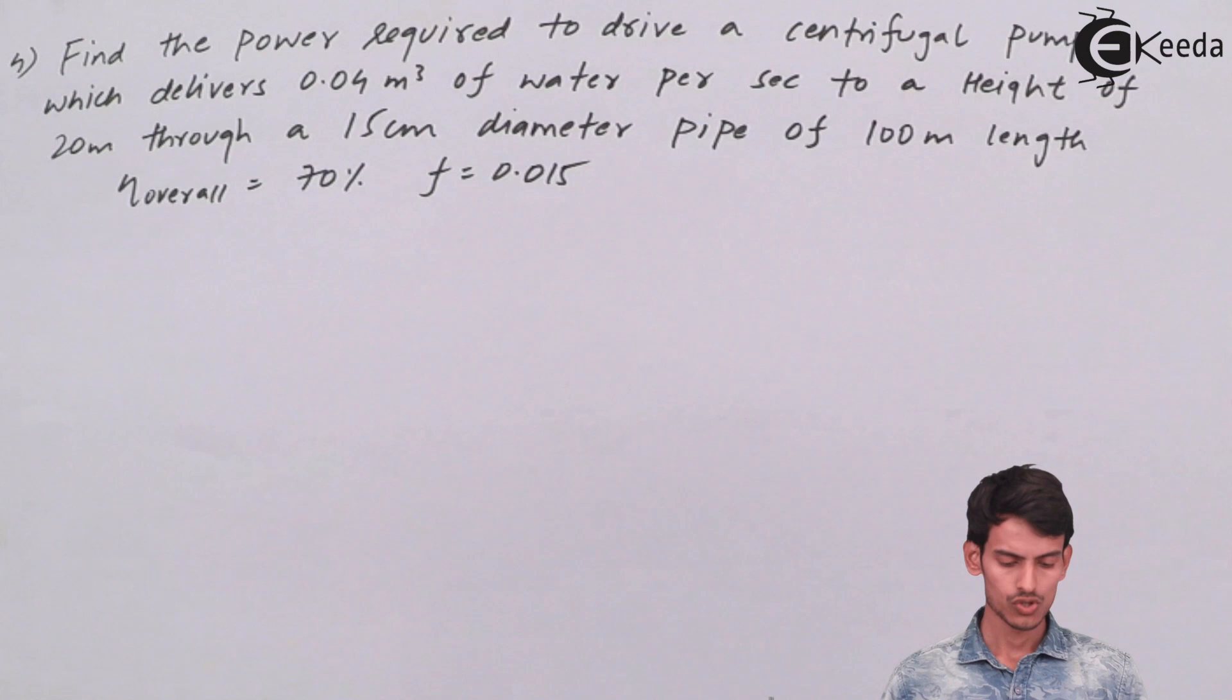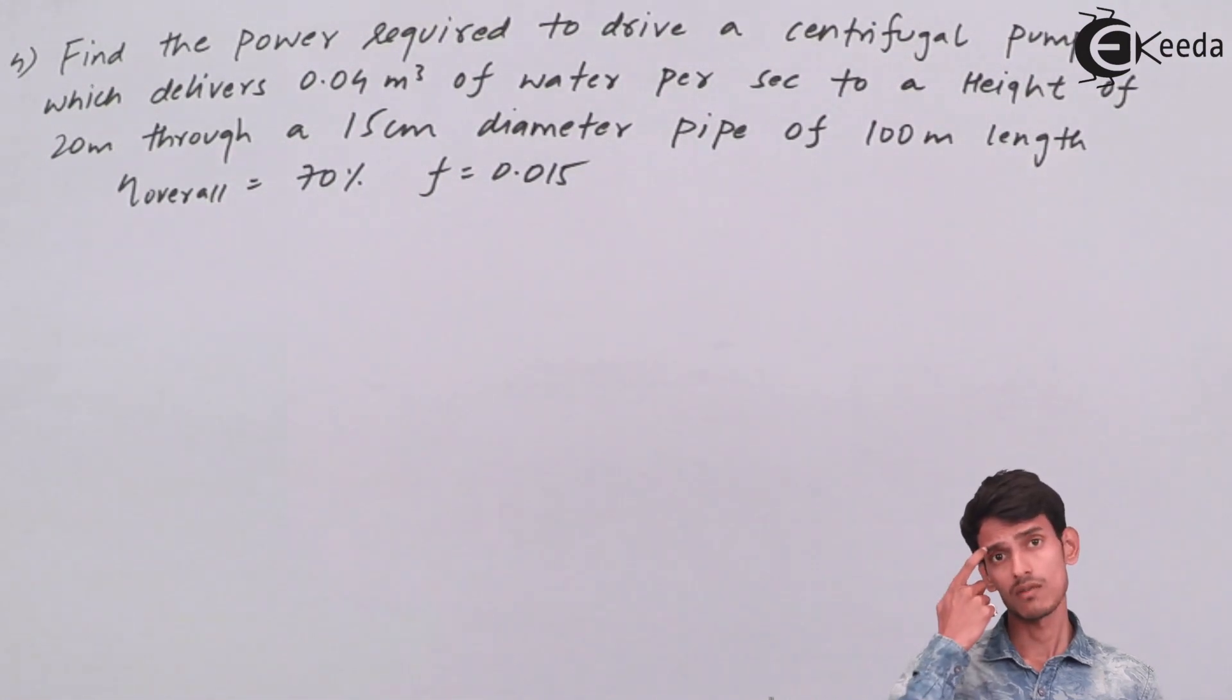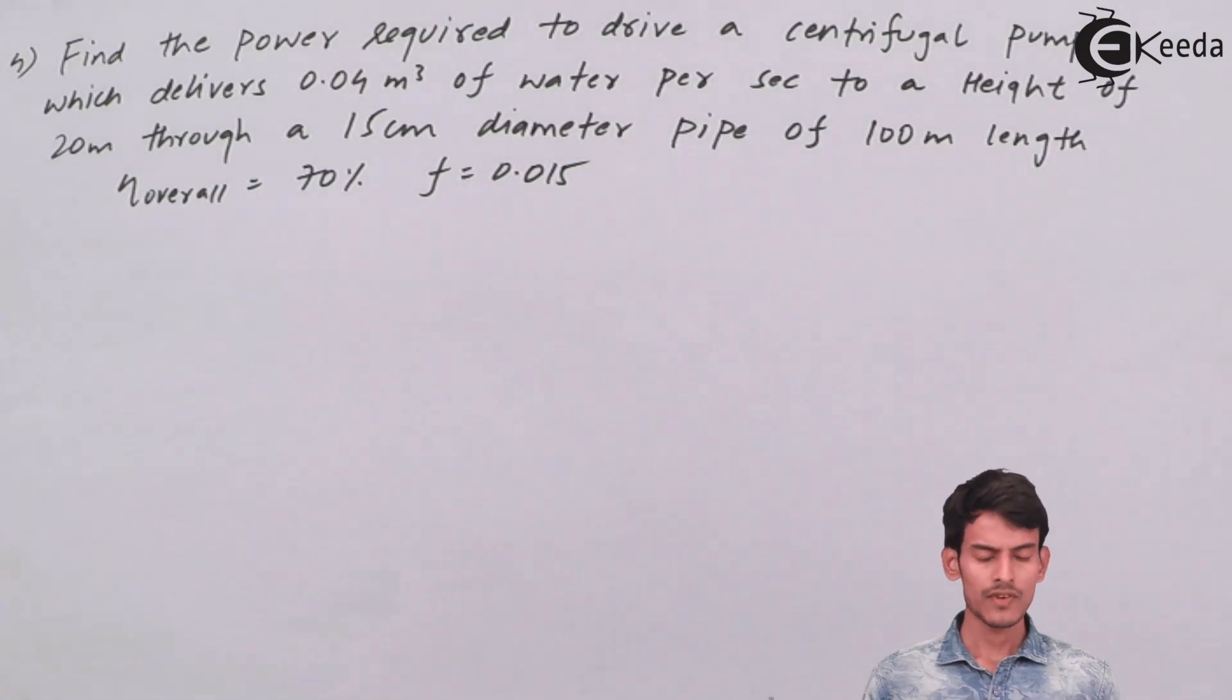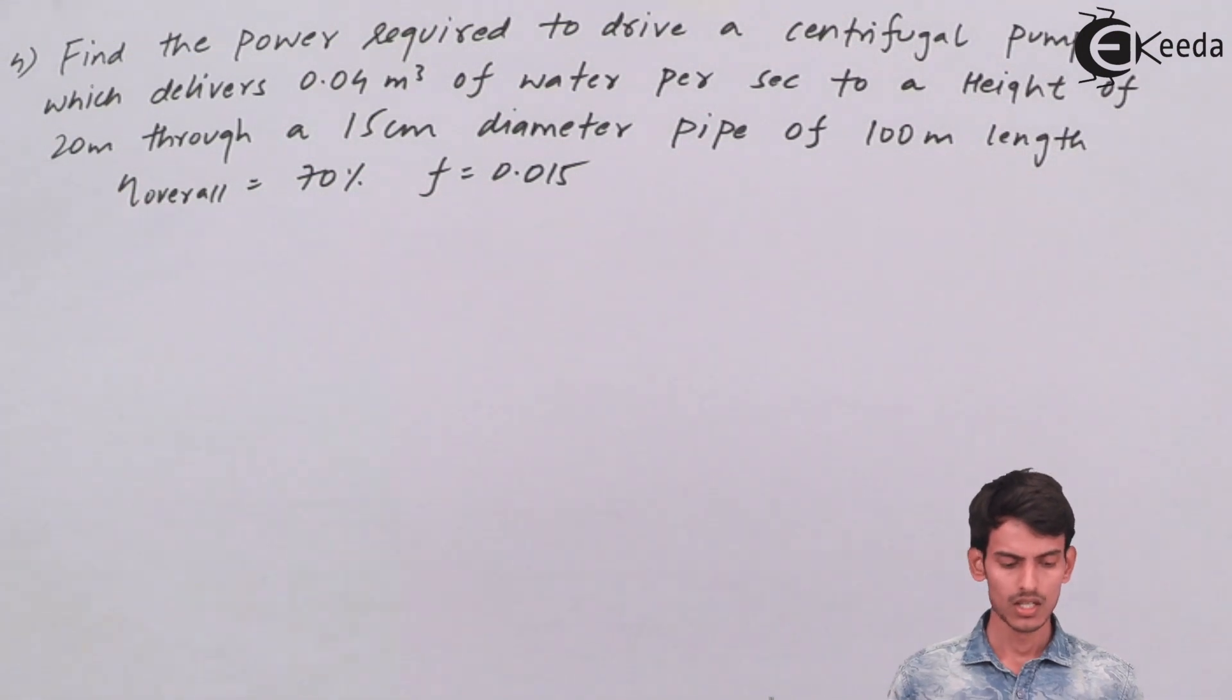For the first time in this question, the friction factor is given because here you need to calculate the head losses. Earlier questions were different - here you need to calculate the head loss as well. So the friction factor is given to you. Let's write down the data first and then we'll see how we calculate power.